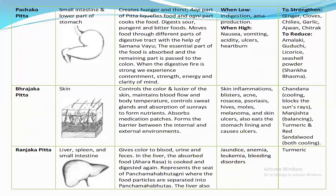When Pachak Pitta is low or imbalanced, symptoms include indigestion, ama production, and nausea. Herbs to increase it include garlic, Ajwain, and Chitraka. Herbs to reduce it include Guduchi, licorice, Haritaki powder, and Shankha Bhasma.